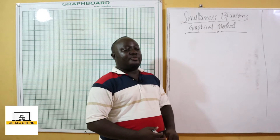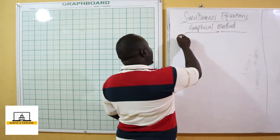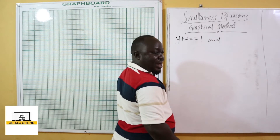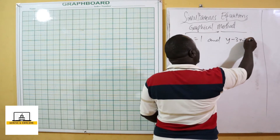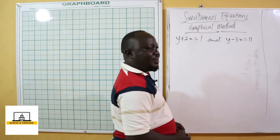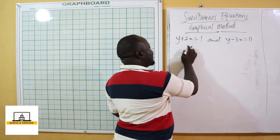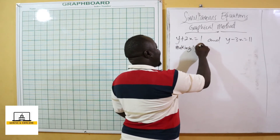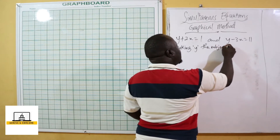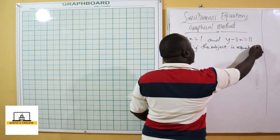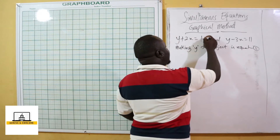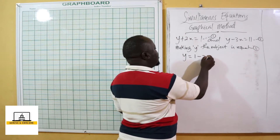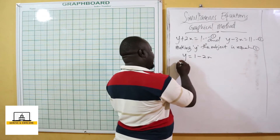We are going to solve y plus 2x equals 1 as our first equation, and y minus 3x equals 11 as our second equation. We are going to make y the subject. Making y the subject from equation 1, we shall have y equals 1 minus 2x. Now I'm going to pick three values of x and find the corresponding y values.